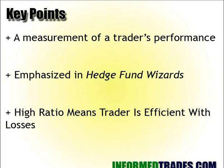The gain-to-pain ratio is a way of measuring a trader's performance to see if a trader is really managing risk properly and earning sufficient rewards relative to the risk. It's basically a way of measuring reward to risk. It's emphasized in the book Hedge Fund Wizards by Jack Schwager — a really great book, as Jack Schwager's books often are.